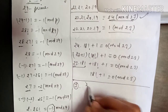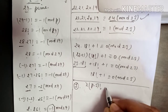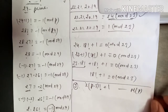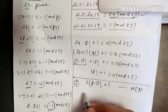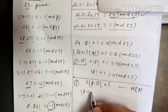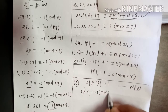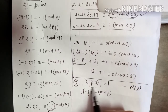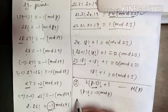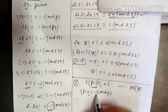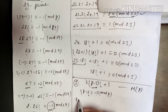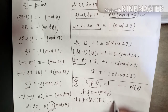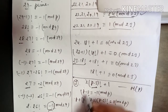Now we move to example number 3. If p is a prime number, then prove that 2(p-3)! + 1 is a multiple of p. To prove this, we apply Wilson's theorem since p is prime: (p-1)! ≡ -1 (mod p). We need (p-3)! in our expression, so we break down (p-1)! as (p-1)(p-2)(p-3)! ≡ 0... which with the +1 gives (p-1)(p-2)(p-3)! + 1 ≡ 0 (mod p).